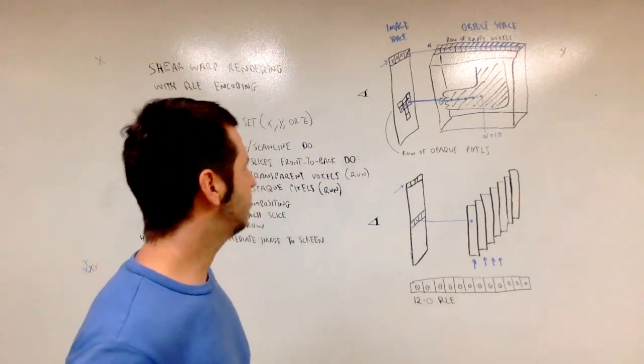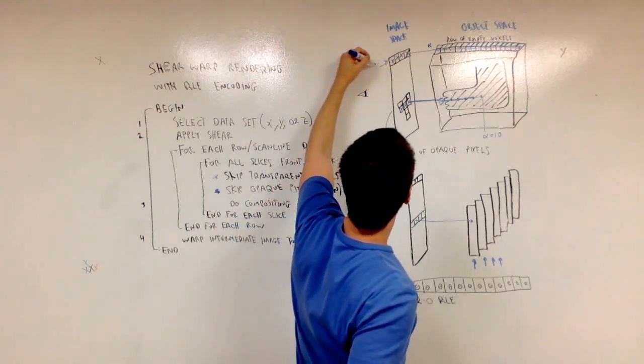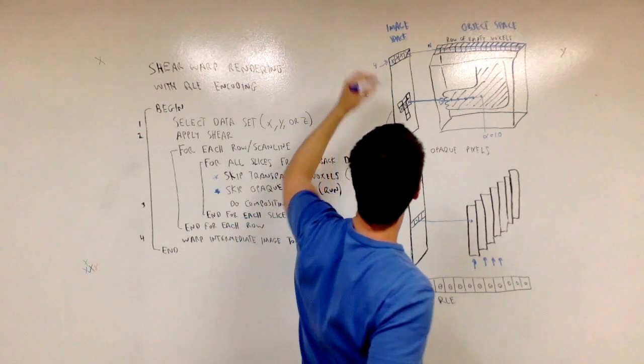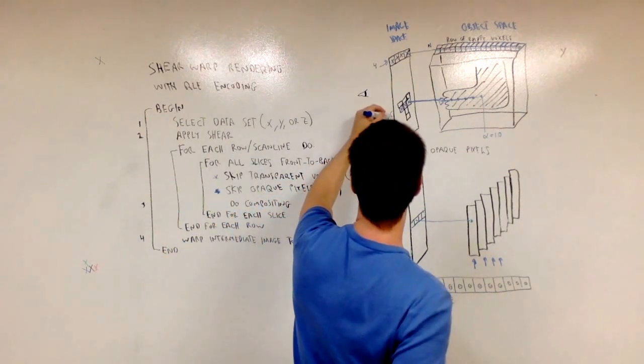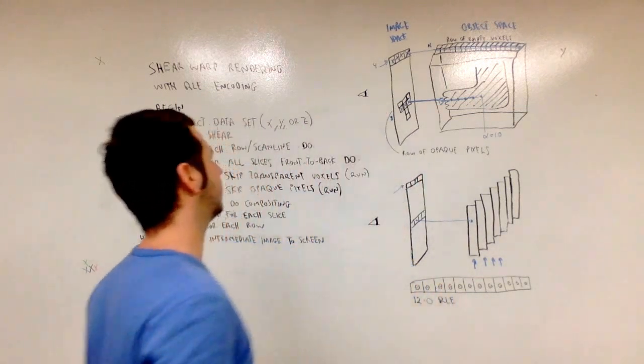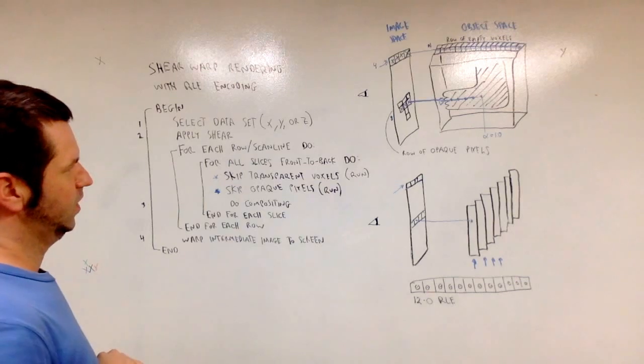Now in this simple example, it's very exciting. This is a run length of four. So we skipped, say, four transparent voxels. And in this exciting example, we could skip, say, three opaque pixels along that row.